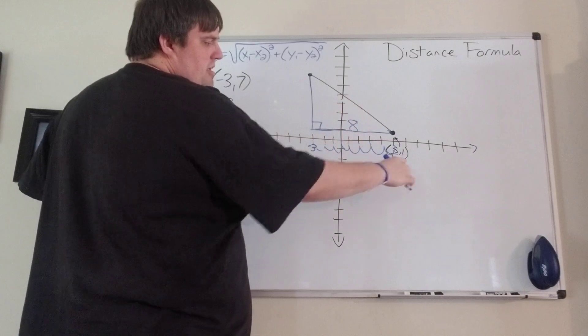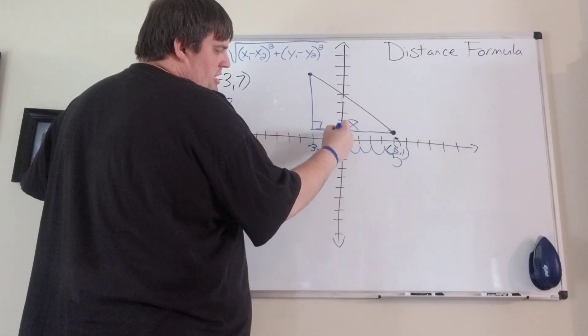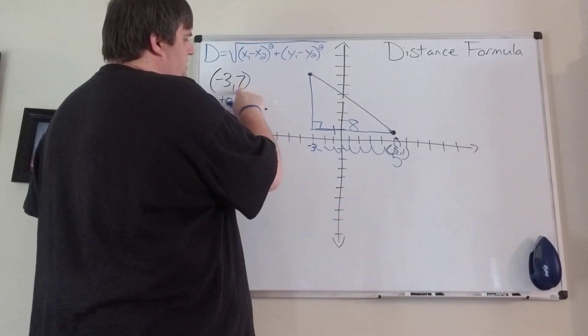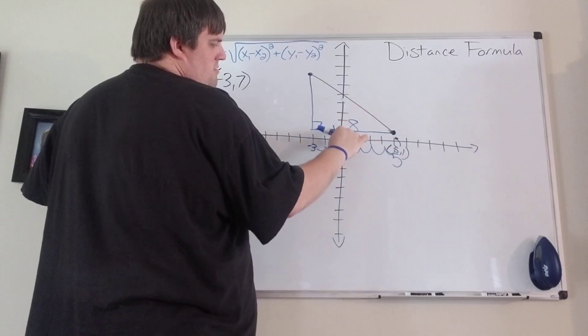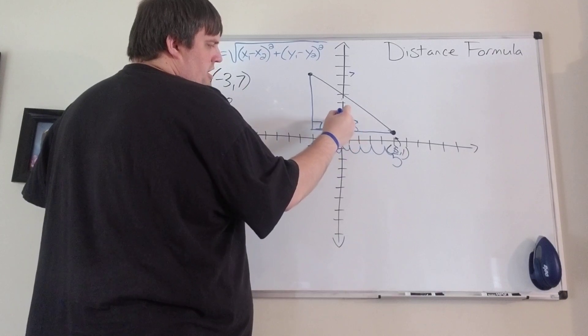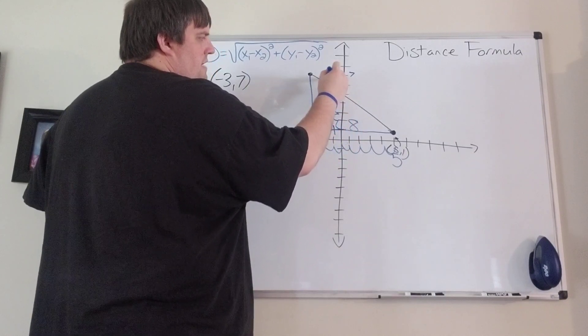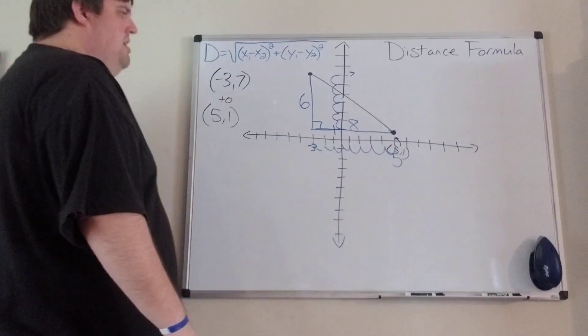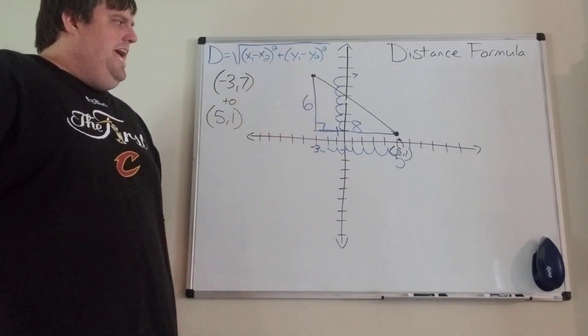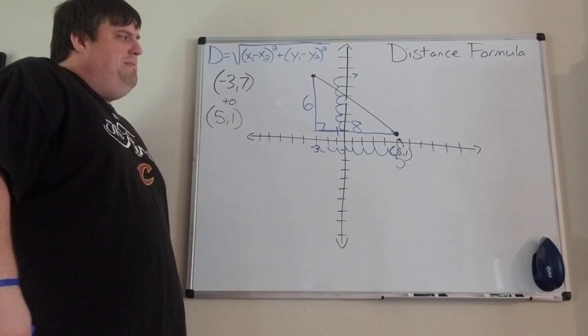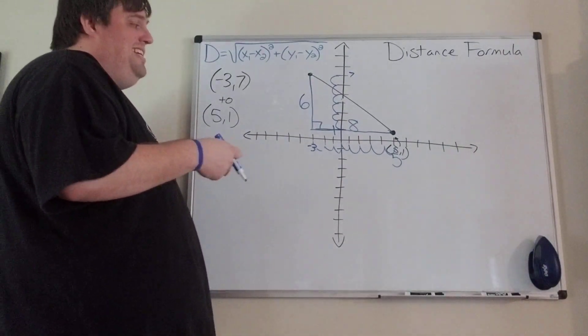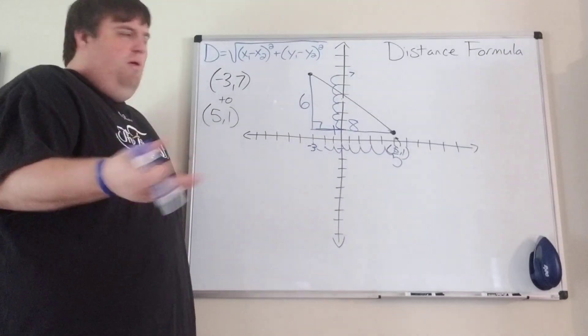I'm going to do the same thing on the y-axis here. The y-axis on this point right here is one, and the y-axis up here is seven. One, two, three, four, five, six, seven. So from one to seven is one, two, three, four, five, six spaces long. So we know that that value on the side, the other leg of this right triangle is going to be six units long. Hopefully that makes sense how we got that. If it doesn't, I'm going to show you the other way and hopefully that will help you out.